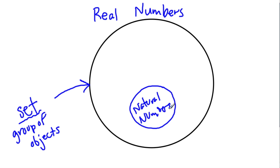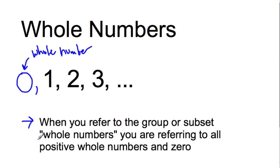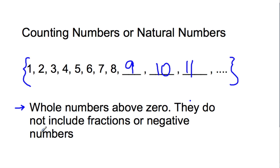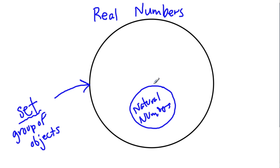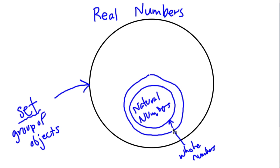The next group of numbers are whole numbers. They are essentially the same as counting numbers with one exception — they don't start at one, they start at zero. Zero is a whole number. So whole numbers are zero, one, two, three, and so forth. In our group of real numbers, whole numbers form a slightly larger group that includes all the natural numbers plus the number zero.